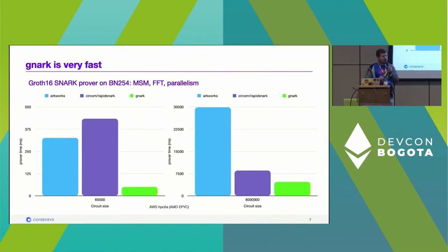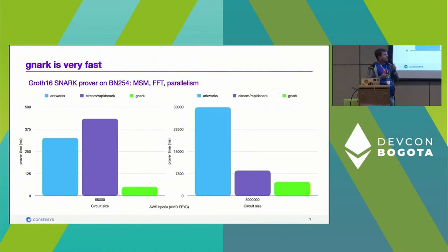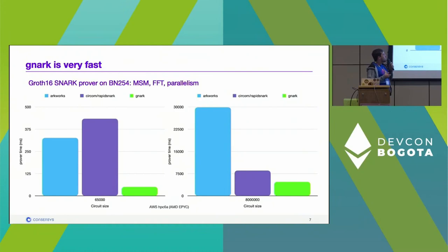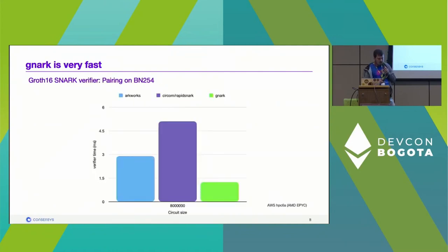So why is gnark that fast? For the Groth16 SNARK prover on BN254, performance comes down to MSM computations, FFT computations, and parallelism. Comparing against arkworks in Rust and circom with rapidsnark back-end in C++, for two circuit sizes — 65K and 8 million constraints — on an AWS AMD machine, gnark performs very well for both. Some libraries are heavily optimized for large circuits specifically, but gnark is optimized across the board.